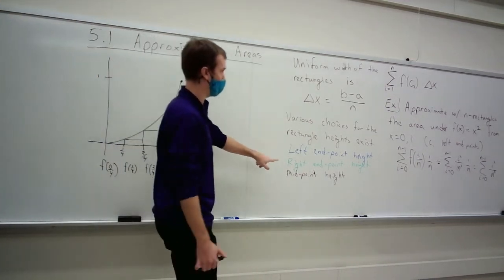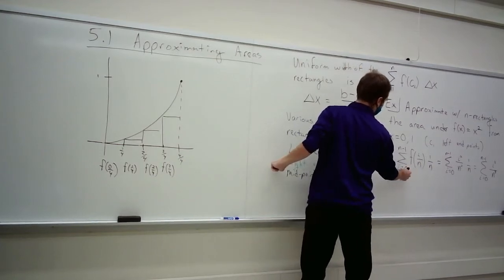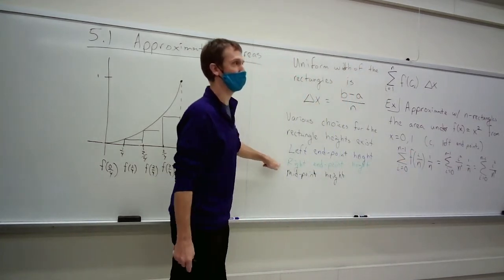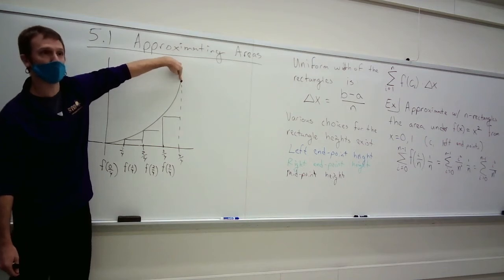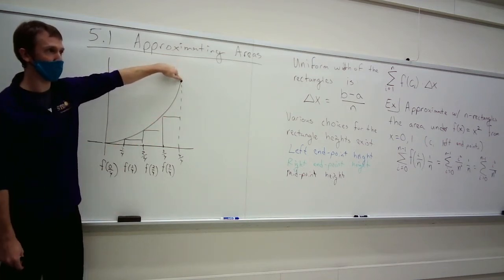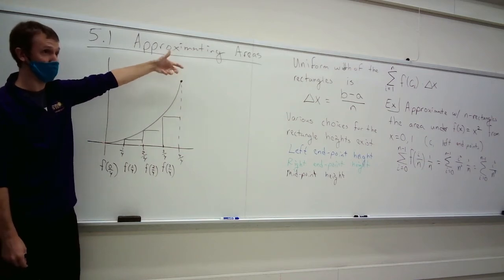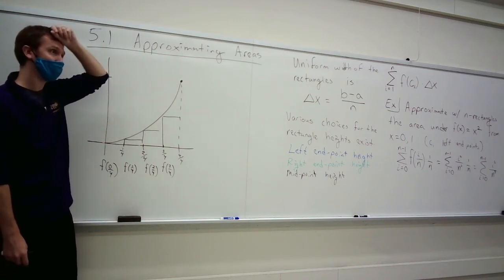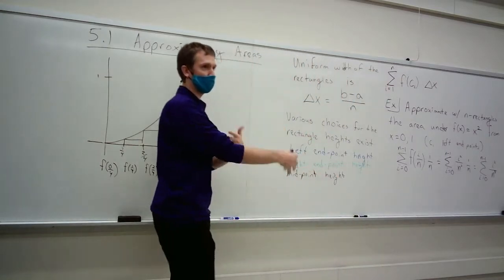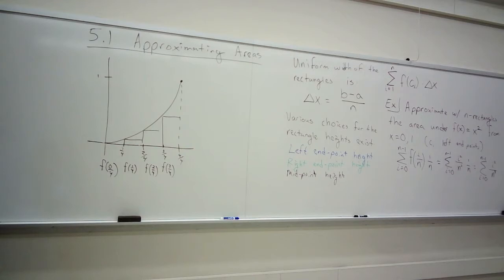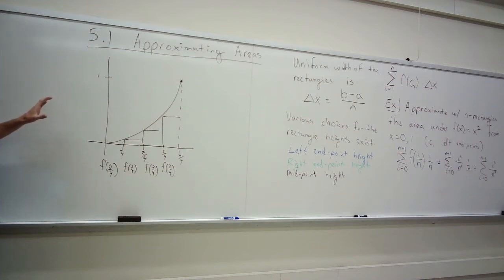Had we chosen right endpoints, the sum would change: we'd pick heights at 1/4, 2/4, 3/4, and 4/4, so we'd start at i = 1 and go up to i = n. For midpoints it would be altogether different — we'd have to figure out what to plug in, we couldn't just use simple counts of i/n. This is the process to approximate the area under most nice functions with rectangles.